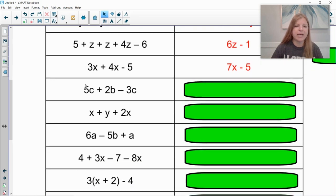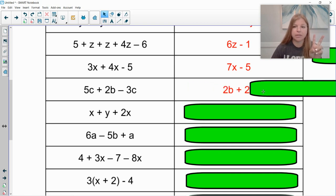The next one. I see I have a 5c and a negative 3c. So this would be 5c minus 3c. 5 minus 3 is 2. And then that 2b has nothing to combine with. So my final result is 2b plus 2c.